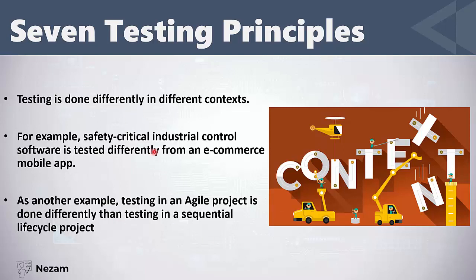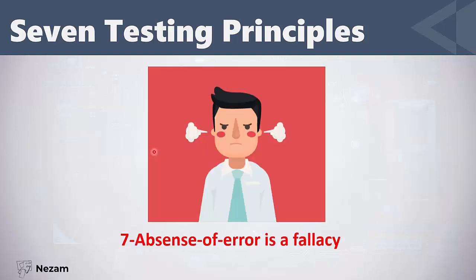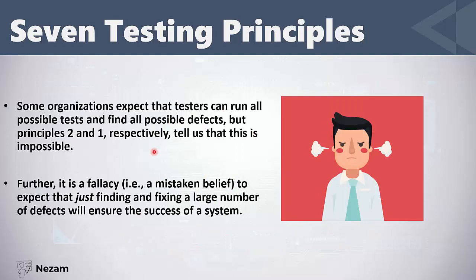The last principle is: absence of errors is a fallacy. Some organizations or managers expect that a tester can find all the possible defects. However, principles one and two tell us this is impossible — you as a tester can only find most of the defects, not all of them.